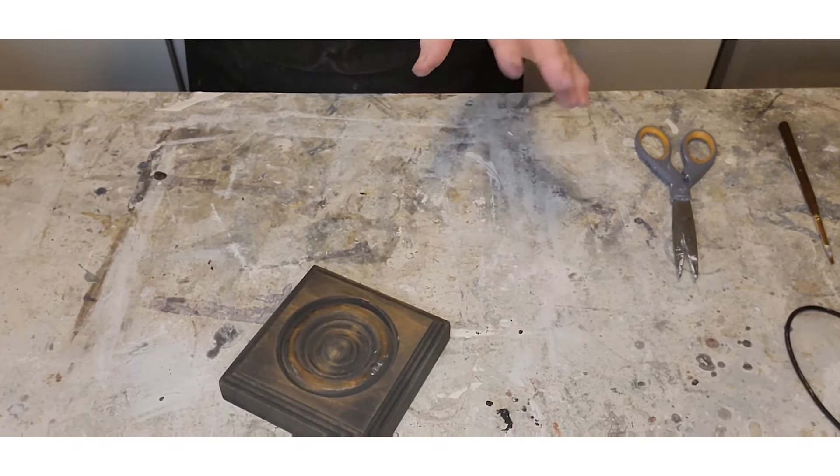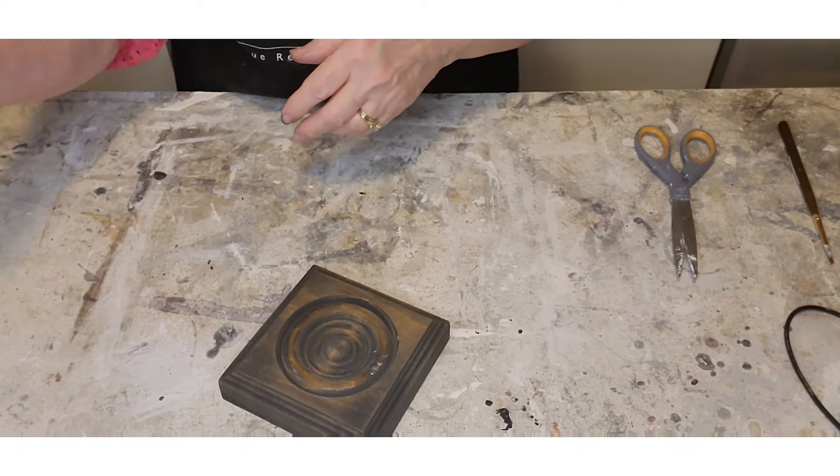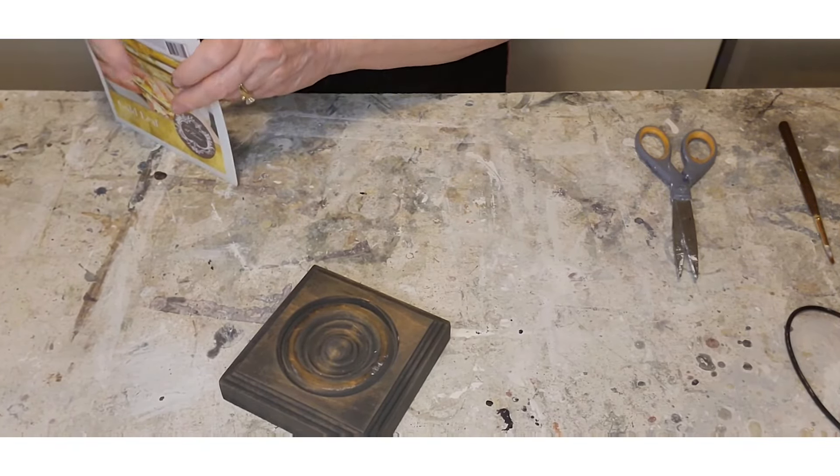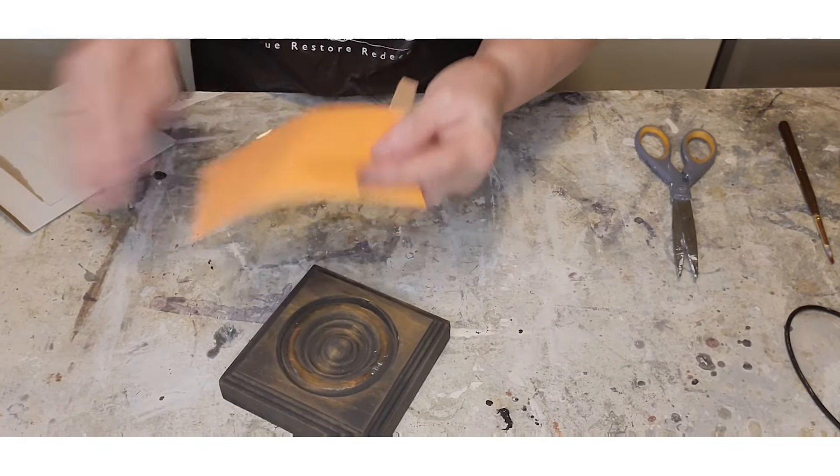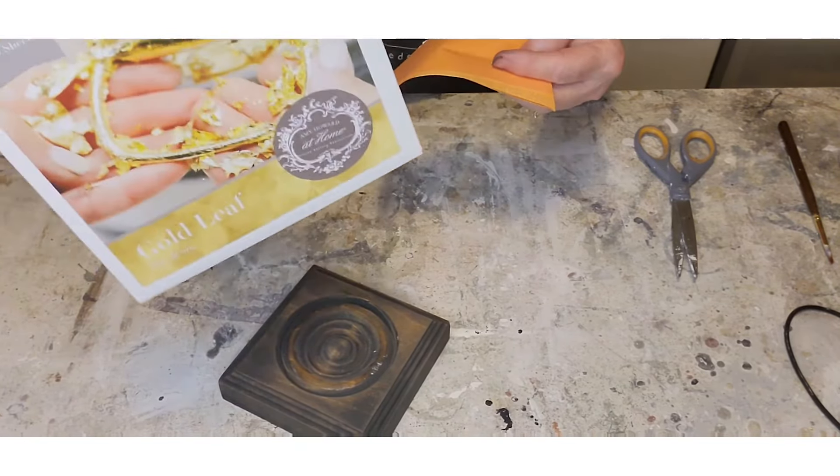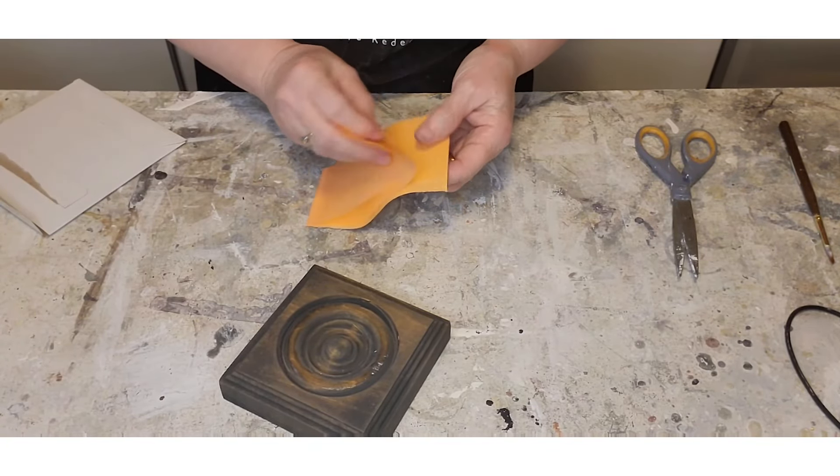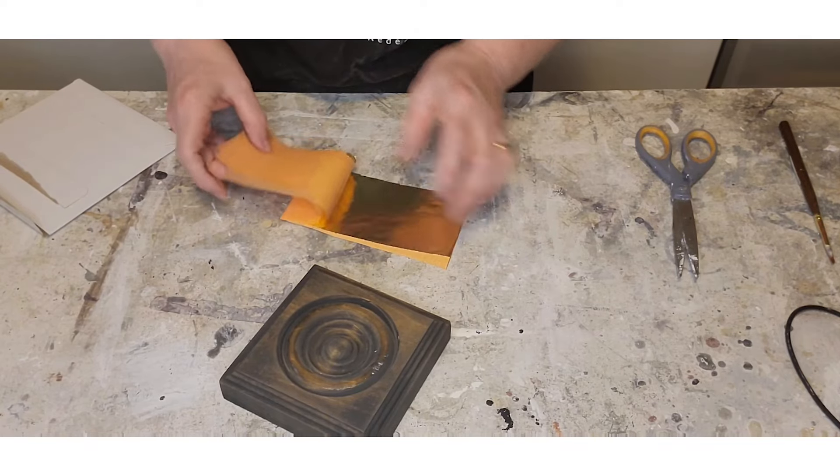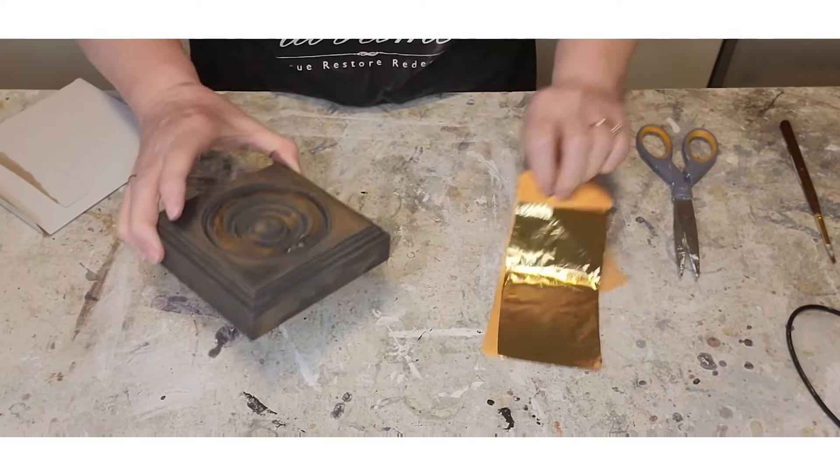Then just spread it on, put it on and wipe it off. That's all you've got to do. I usually cut my books, your book will come in a 25-piece, but I usually like to cut my books because usually I don't need that big of a piece.